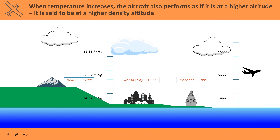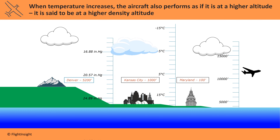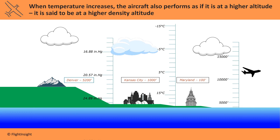Similarly, if the temperature rises and air molecules spread out, the aircraft will behave as if it is even higher. So raising the temps causes the aircraft to perform not as if it were at its pressure altitude of 11,000 feet, but at what's called its density altitude of 12,000 feet. The definitions are: pressure altitude is true altitude corrected for non-standard pressure, or the altitude indicated when the altimeter is set to 29.92. Density altitude is pressure altitude corrected for non-standard temperature.